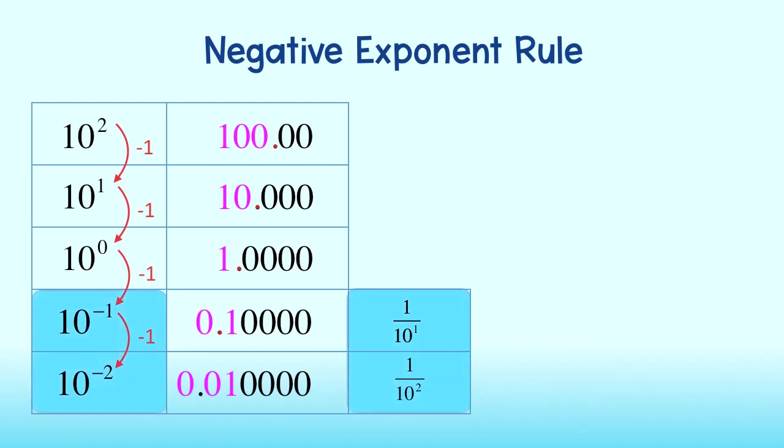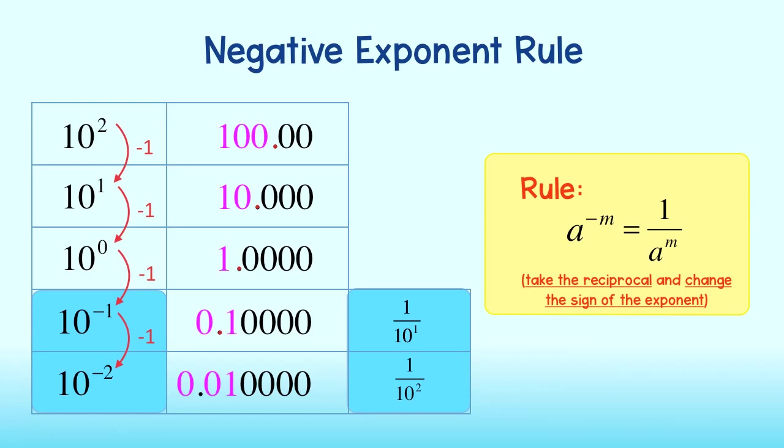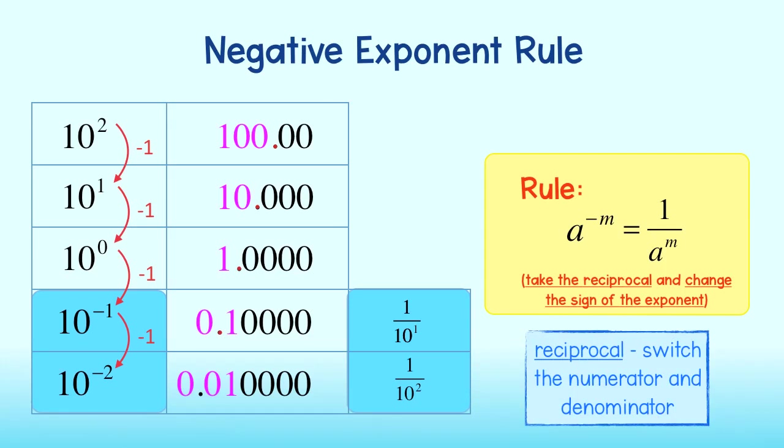We can focus in on these negative exponents to see what is happening. You'll see that to simplify a negative exponent, we take the reciprocal and change the sign of the power. And remember, reciprocal just means that we switch the numerator and denominator.